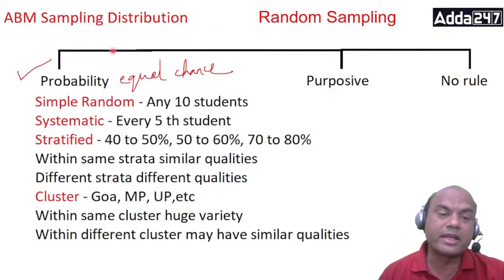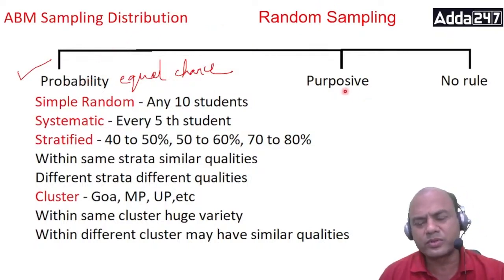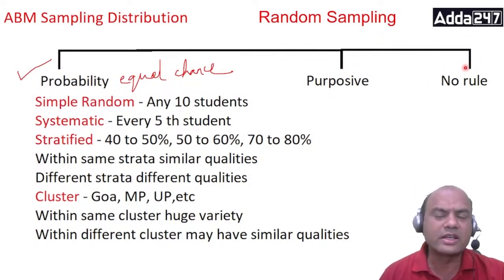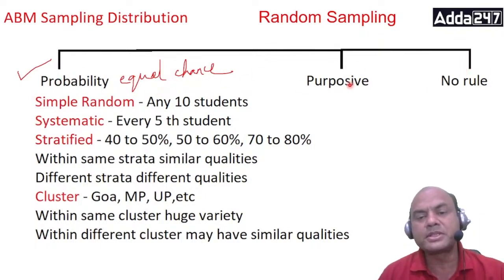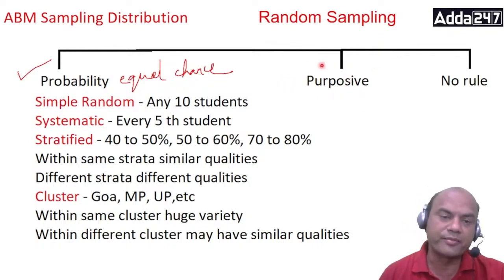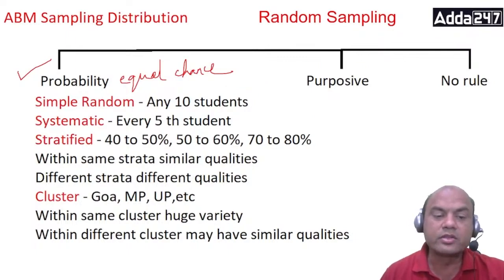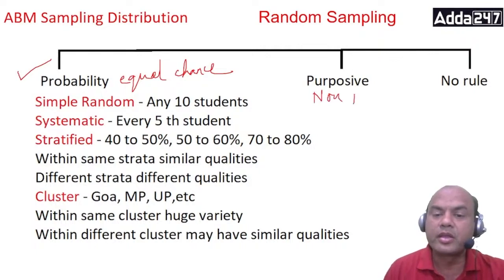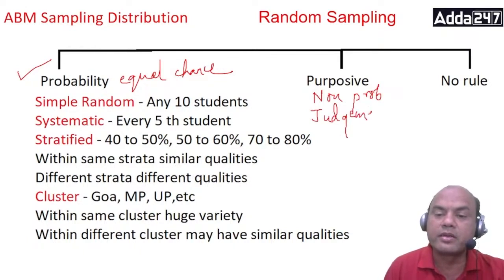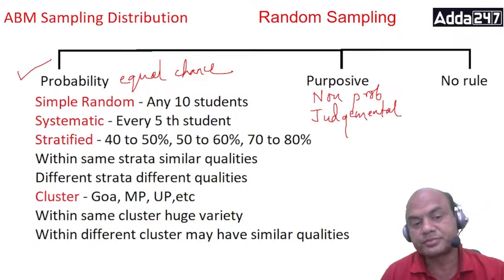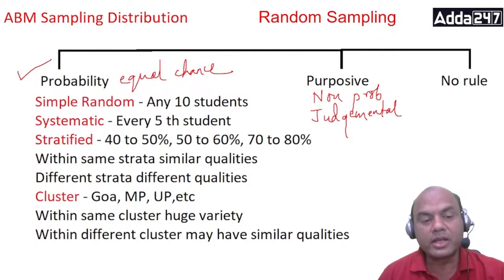Sampling is generally of three types: probability, purposive, and no-rule sampling — no-rule is generally not asked in exams. Probability and purposive are asked many times. Purposive is also called non-probability or judgmental sampling. Probability sampling is of four types: simple random, systematic, stratified, and cluster. We will study each in detail.